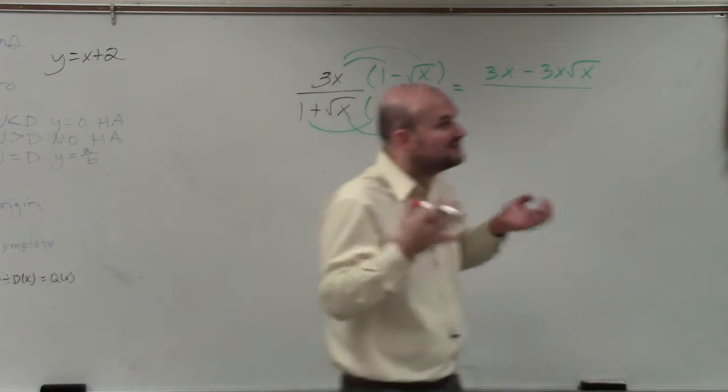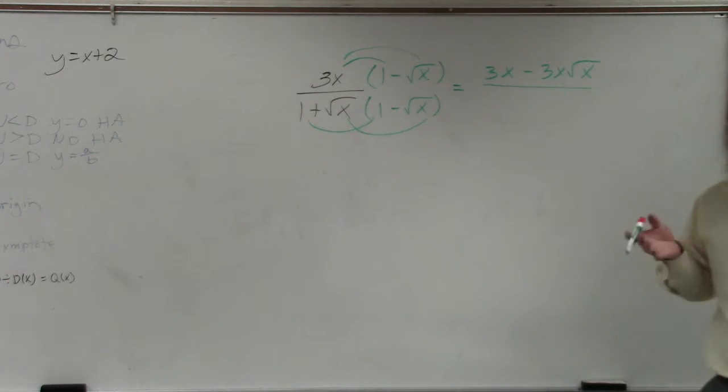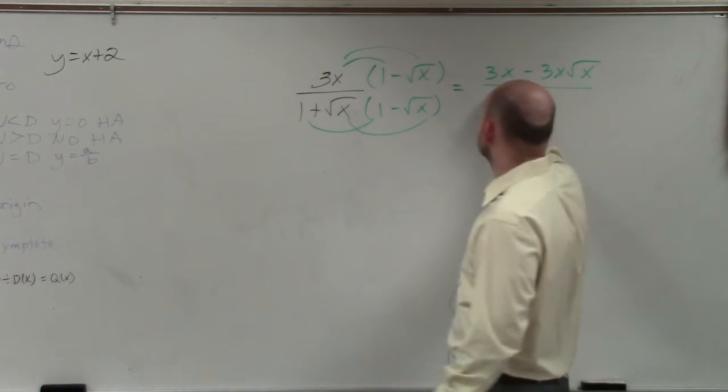This is an example of difference of two squares where the middle terms cancel out. If you want to do the whole FOIL, do the whole FOIL. But you'll get the same answer.